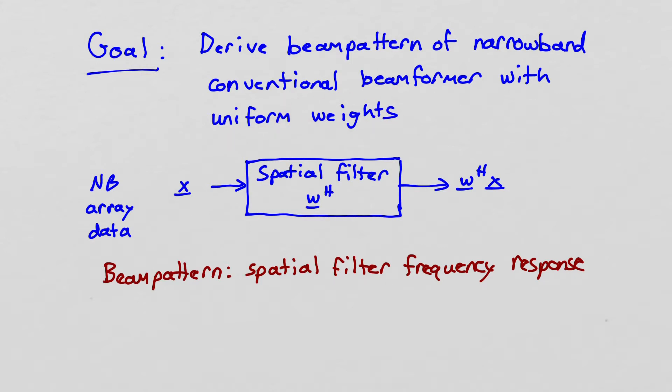A narrowband beamformer takes narrowband data from the array stored in some vector x and processes it with a spatial filter defined by a weight vector w and computes the output as w hermitian x. And remember that the beam pattern is simply the spatial filter frequency response. It tells us how the spatial filter responds to an input coming in at a certain angle.